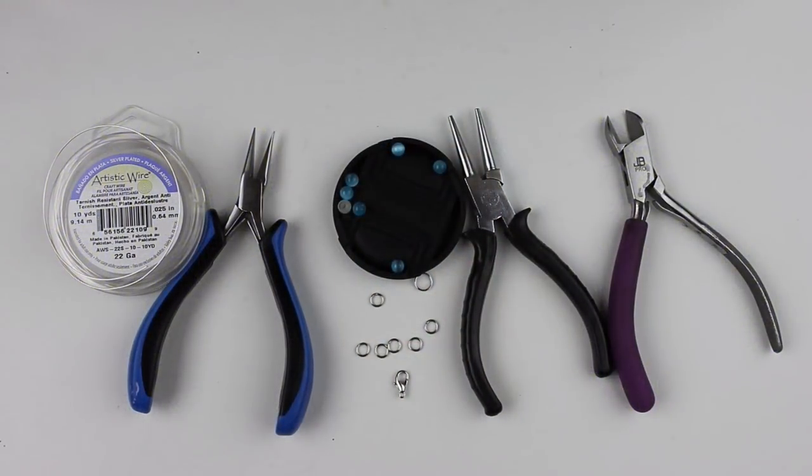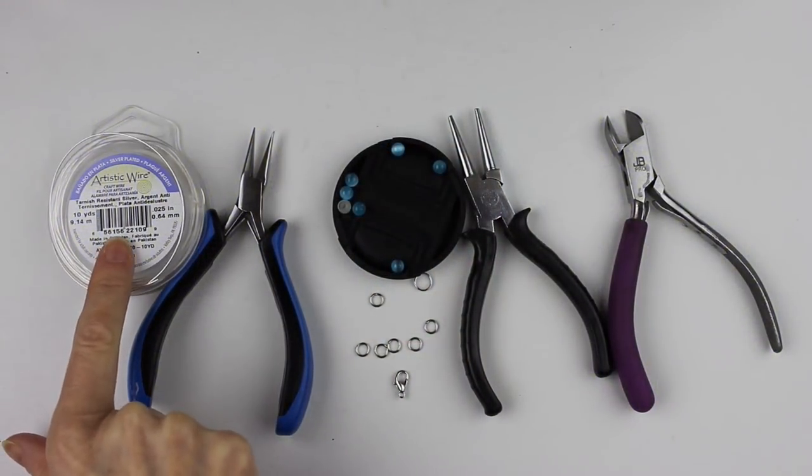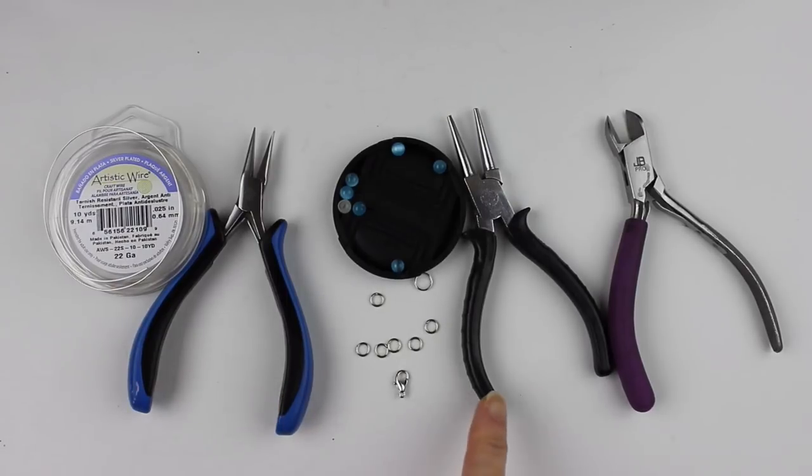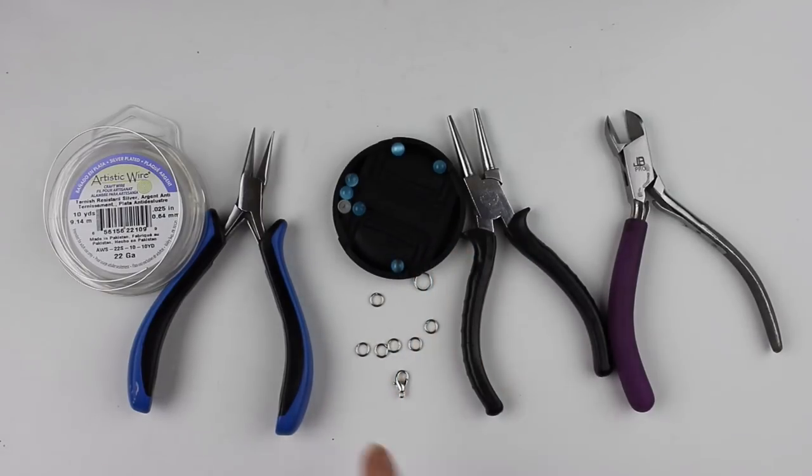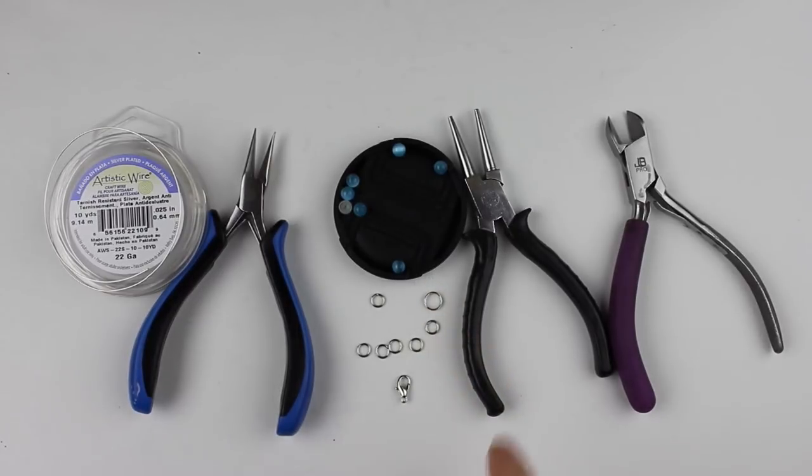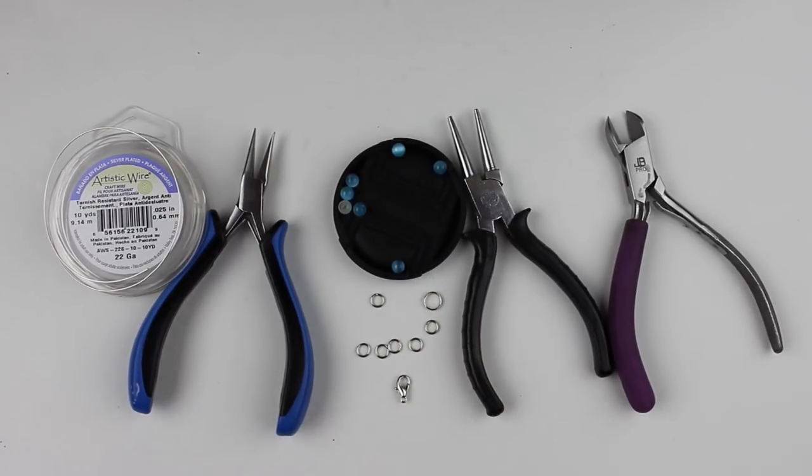So what you're going to need for this project is 22 gauge wire, flat pliers, round pliers, cutters, 6mm cat's eye beads or any round bead, 6 jump rings, a clasp and a little split ring at the end.